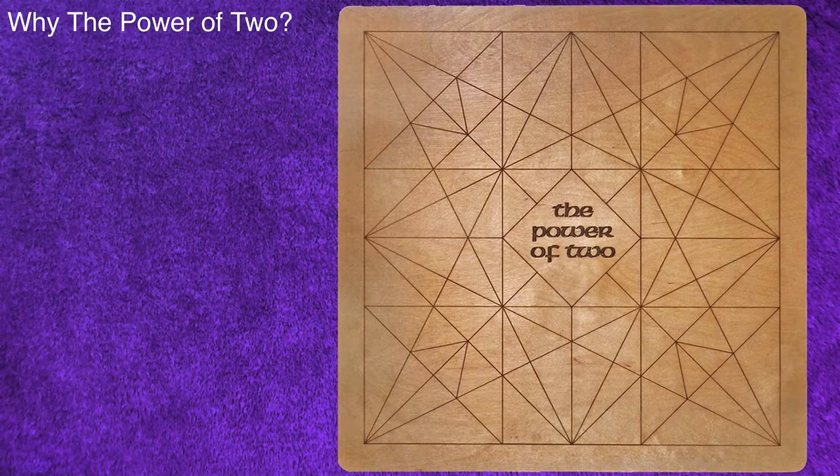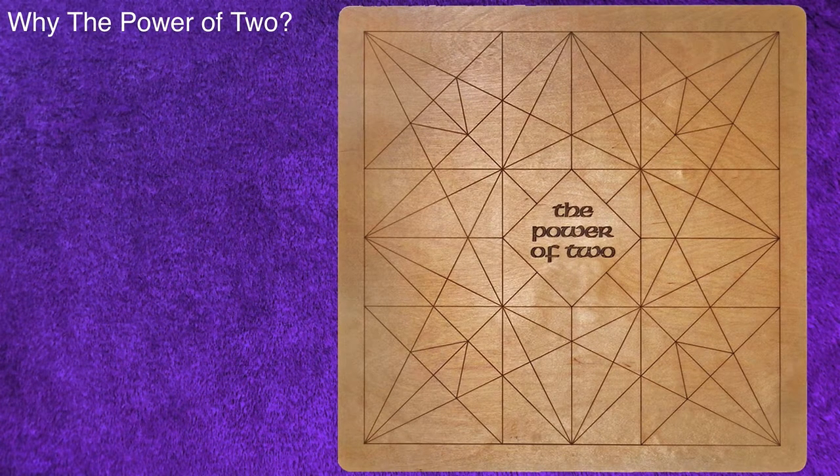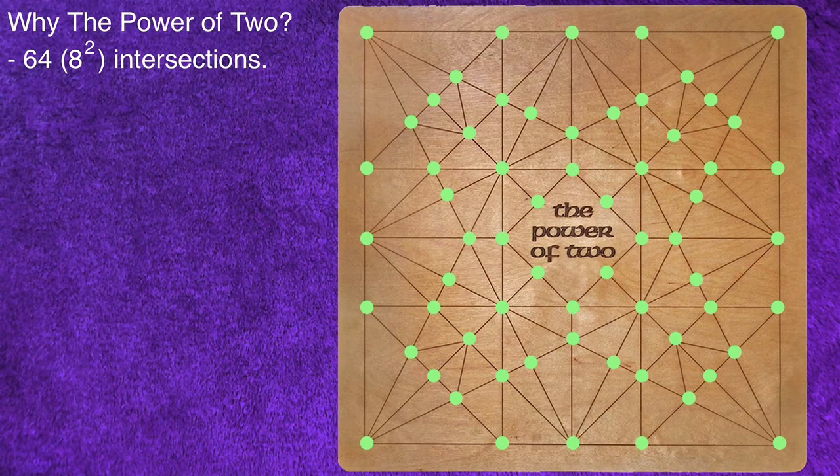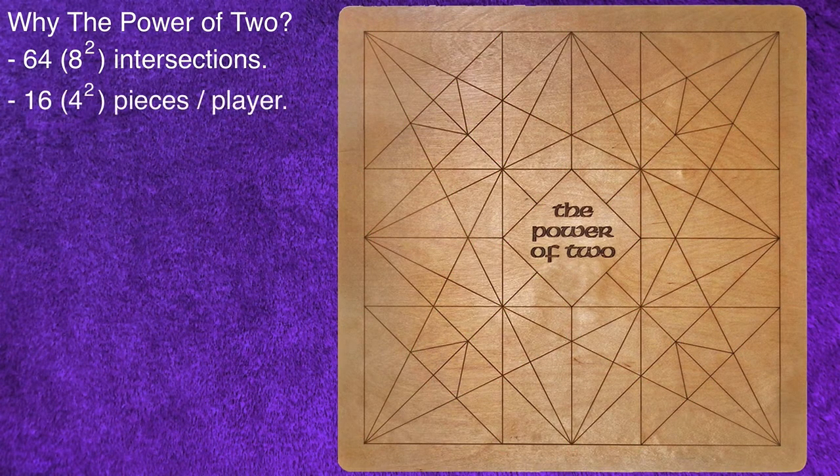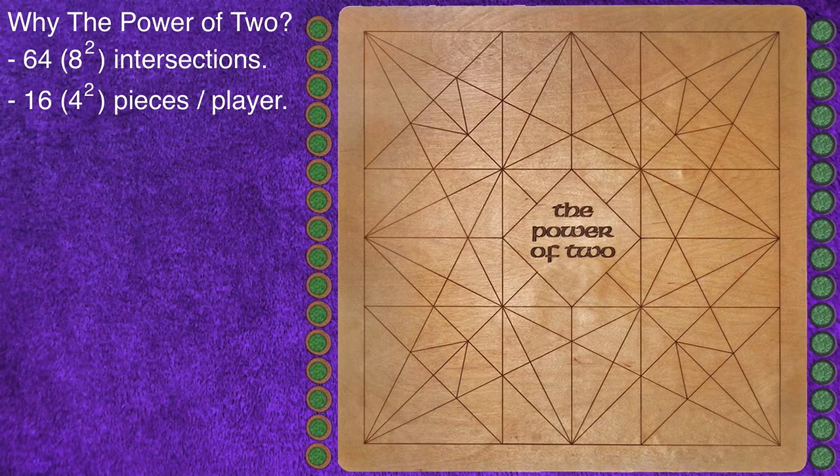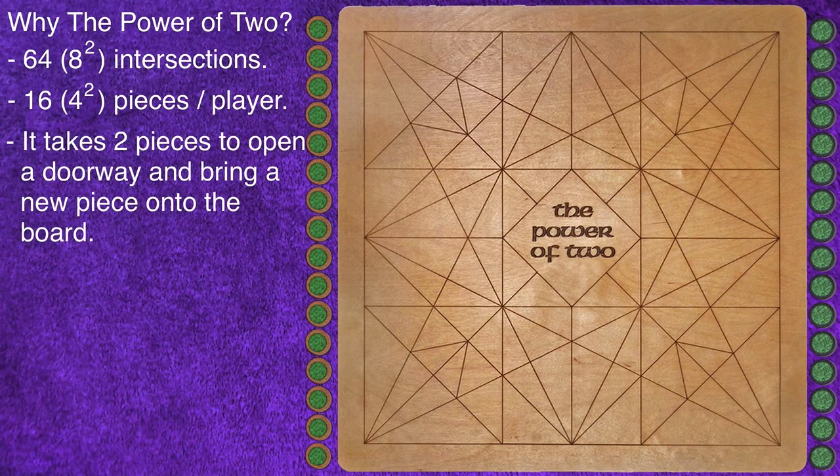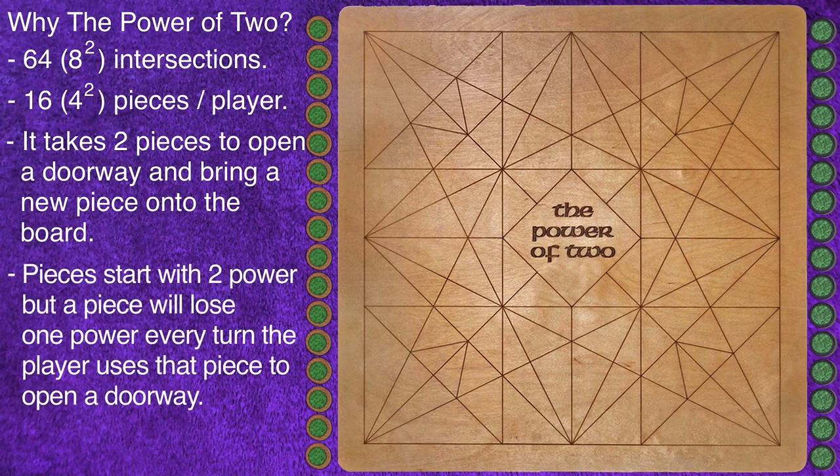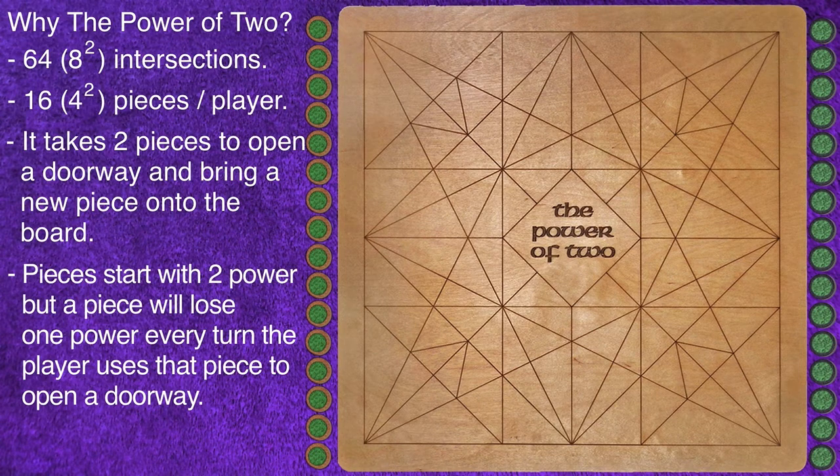So why is the game called The Power of Two? There are 64 intersections on the board, which is 8 to the power of 2. Each player has 16 playing pieces, which is 4 to the power of 2. It takes two pieces to open a doorway and bring a new piece onto the board. Pieces start with two power, but a piece will lose one power every turn the player uses that piece to open a doorway.